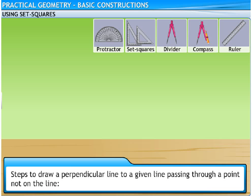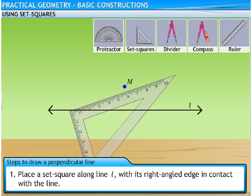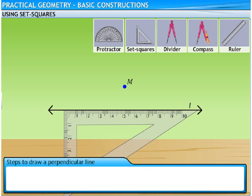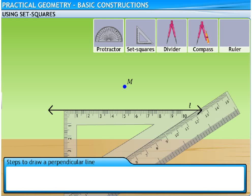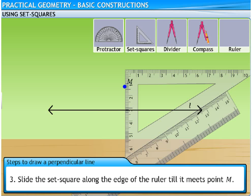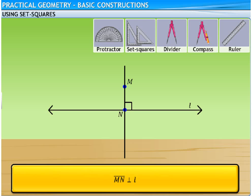In a similar way, we can draw a perpendicular line to a given line passing through a point not on the line. Here, L is a line and M is a point not on the line. First, place a set square along line L with its right angled edge in contact with the line. Next, place the ruler along the edge of the set square opposite to the right angle, that is, the hypotenuse. Slide the set square along the edge of the ruler till it meets point M, ensuring the ruler does not move. Finally, draw a line segment such that it intersects line L at N. Line segment MN is the perpendicular line to line L.